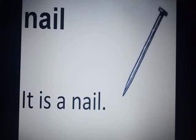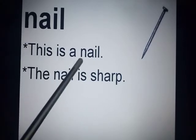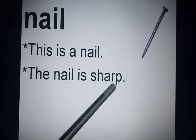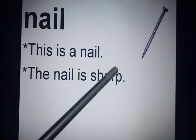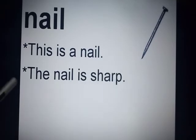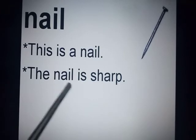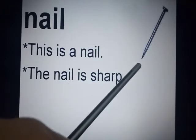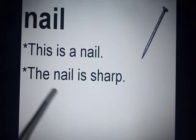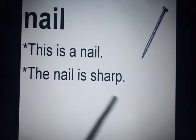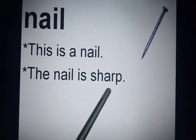Now make some more sentences. The first sentence is: this is a nail — yeh ek nail hai, keel hai. And the second sentence is: the nail is sharp. Sharp means nokeela, tez. The nail is sharp means keel jo hai woh bahut sharp hai, tez hai, nokeela hai.